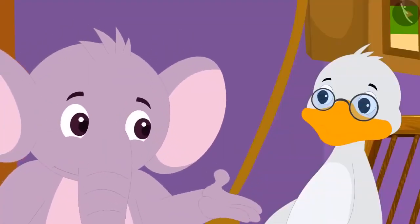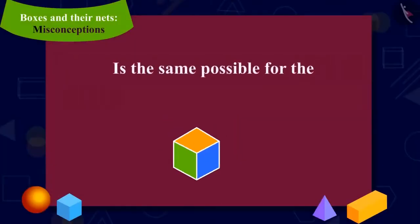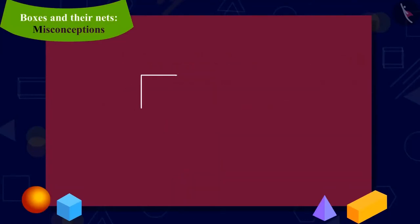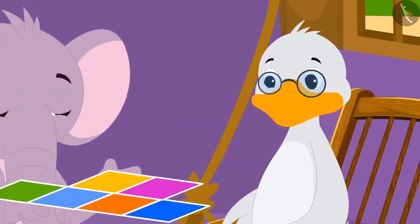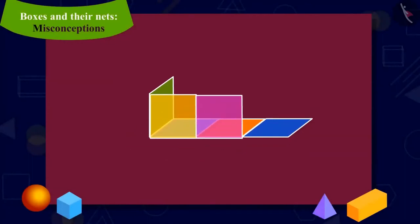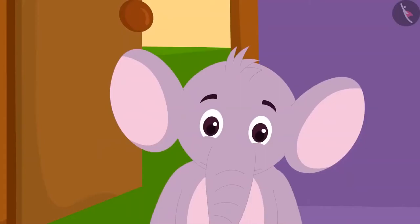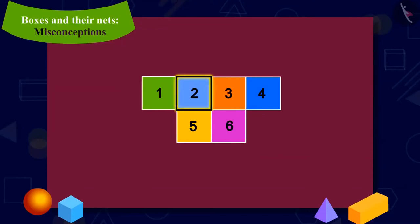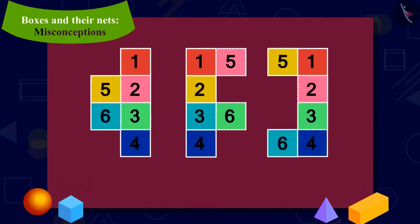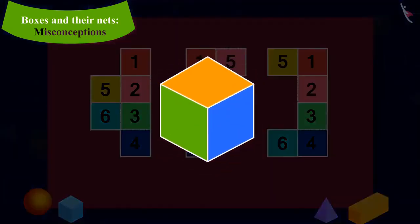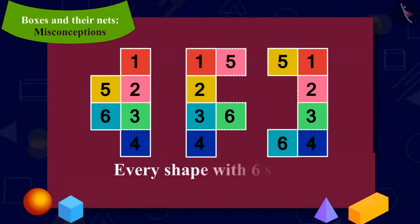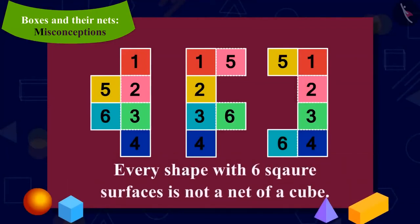Appu was shocked and asked Babu uncle: is the same possible for the shape of a cube as well? Babu uncle made a shape on thick paper and asked Appu to fold it. This figure had six surfaces and all the surfaces were square, yet Appu could not make a cube from it. Yes, kids — it is possible to have shapes with six square surfaces that cannot be folded into a cube. In other words, every shape with six square faces is not a net of a cube.